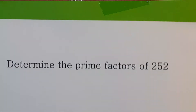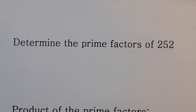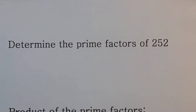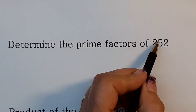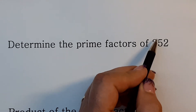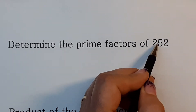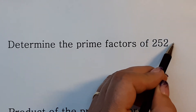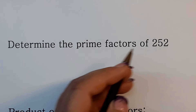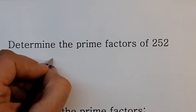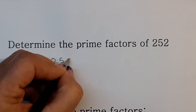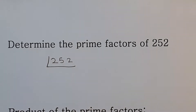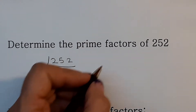To determine the prime factors of a number — in grade six you only work with two-digit numbers, so there are different ways to do it. But now in grade seven you have to work with three-digit numbers, so this method is easier and safer for you to remember. Before you do that, know the following divisibility rules.